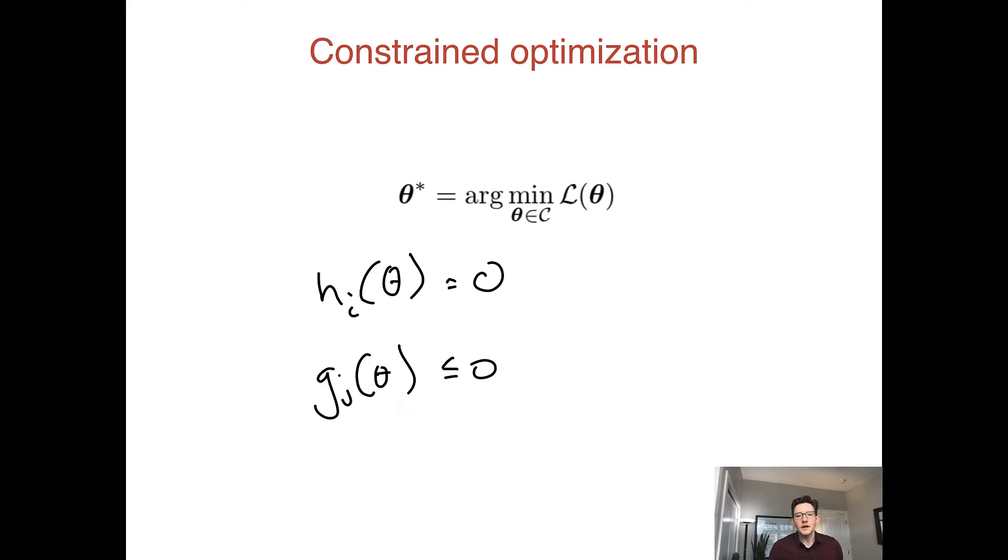A very common one we'll see when we're learning categorical distributions is the following. We might want it to be the case that sum over k of θ_k equals one. In order to write it in this form, we would have to write 1 minus sum θ_k equals zero, so this part would be our h(θ).